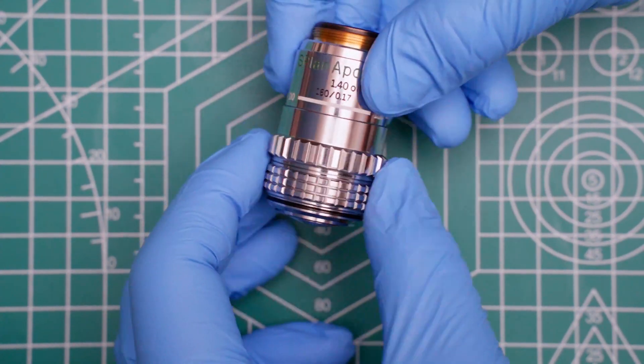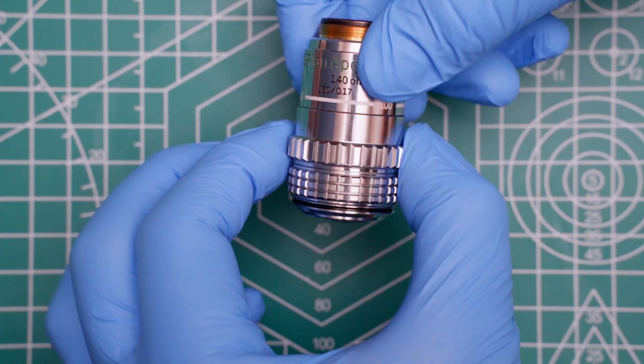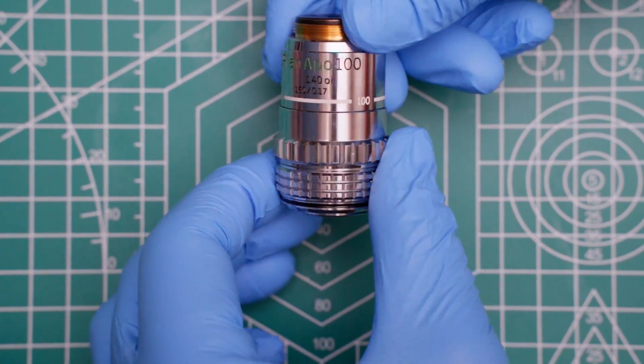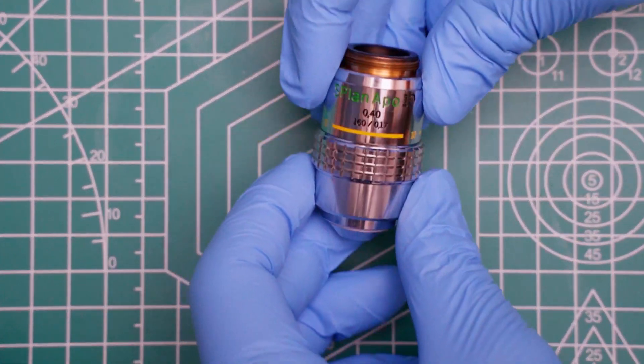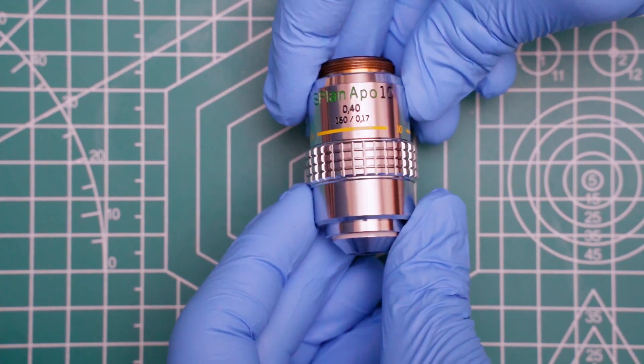Yes, if you have an amateur-grade microscope of reasonable quality, usually some kind of binocular scope with an adjustable Abbe condenser, there's a good chance that you can outfit it with some truly high-grade optics.